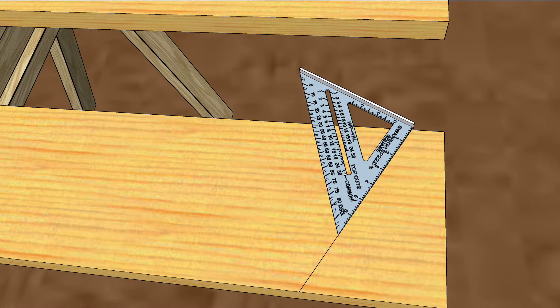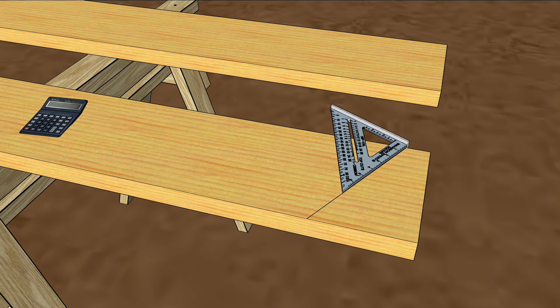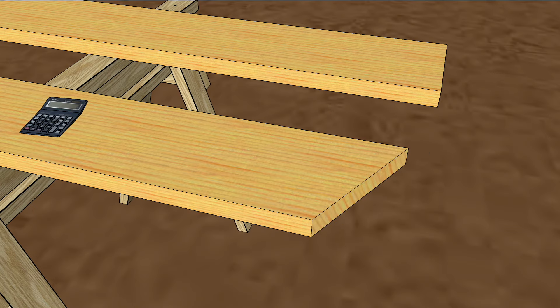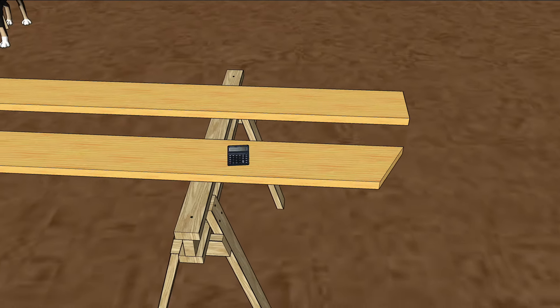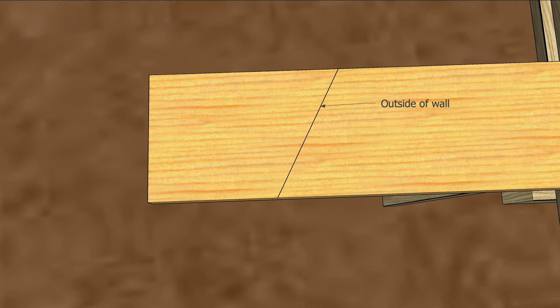This speed square is one of the small ones that fit in your nail bags, but you can buy a bigger one for laying out wide rafters. Hook the long point and measure along the top of the rafter to 16 feet, 8 and 7 sixteenths inches and mark that plumb line.